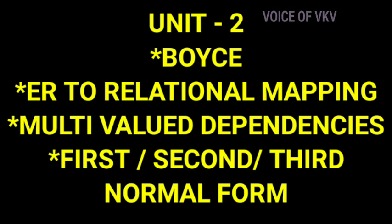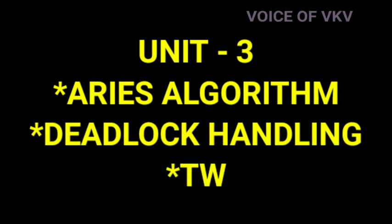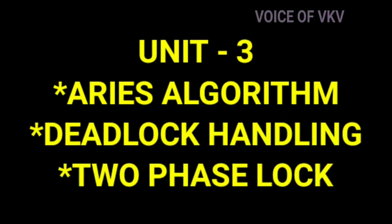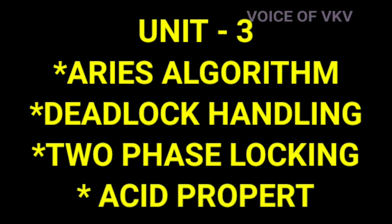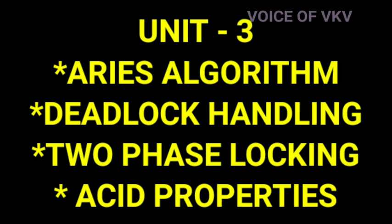In these four topics you need a lot of detail for Unit 2. Moving on, Unit 3 also has a total of four important topics. The first is the ARIES Algorithm or Concurrency Control, the second is Deadlock Handling or Transaction Support in SQL, the third is Two-Phase Locking, and the fourth is ACID Properties or Serializability.